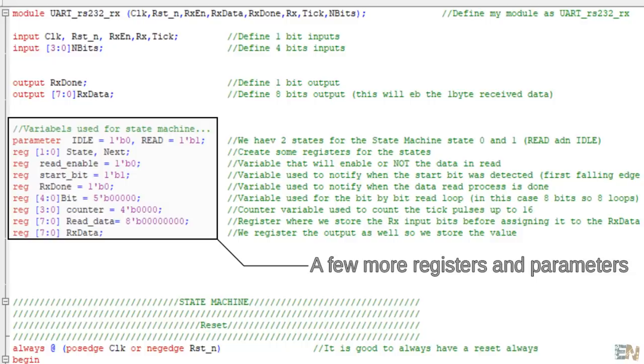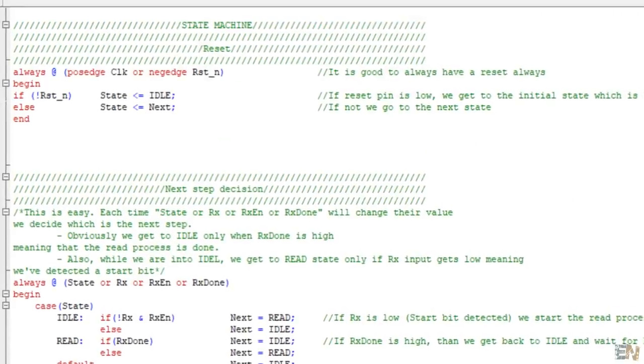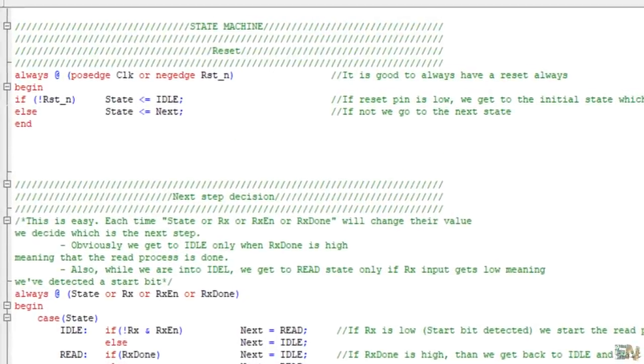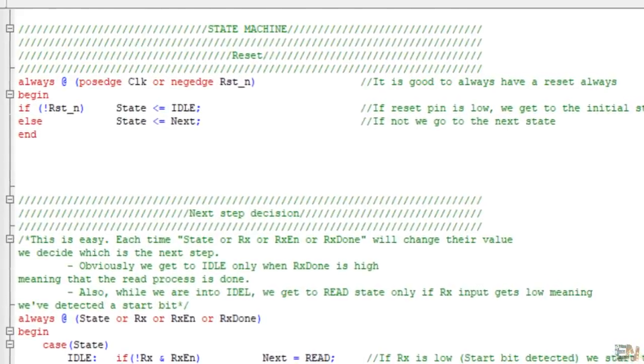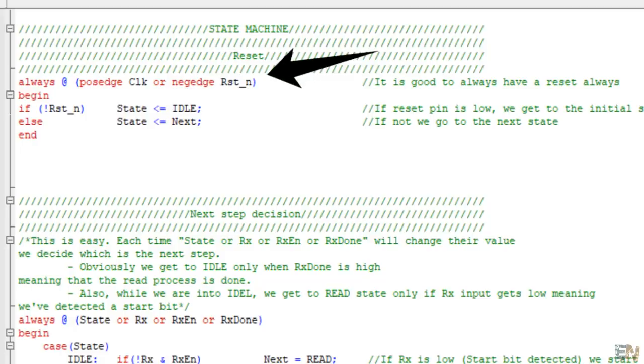Now, I create a few registers that will be used later in the code and we will see why. We will make a so-called state machine. We have the Moore or the Mealy type of state machines but that is for a future video. Now, first thing first, in Verilog code, you should set a reset always. Each time the reset signal is low, we set the state of our state machine to the initial state, which is idle.